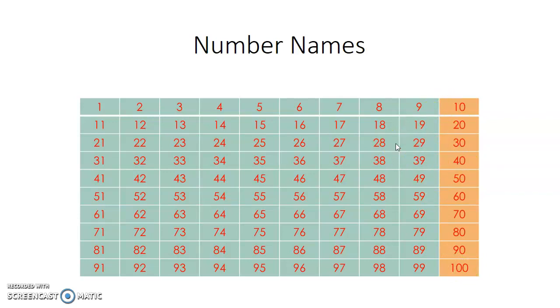This is counting by 10, skip counting by 10. Counting by 10 is: 10, 20, 30, 40, 50, 60, 70, 80, 90, 100.